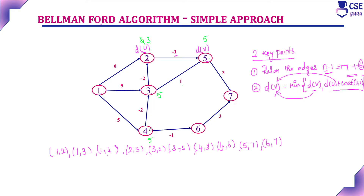For 4 to 6: distance of vertex 4 is 5, so 5 minus 1 equals 4. For 5 to 7: distance of vertex 5 is 5, so 5 plus 3 equals 8. For 6 to 7: 4 plus 3 equals 7, but already distance is 8, so minimum is 7. We consider 7. Now we have completed the first relaxation.